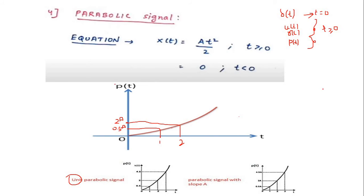So far we have discussed four standard signals. A quick review: δ(t) exists only at t=0, while U(t), R(t), and P(t) all have signals existing at t ≥ 0.